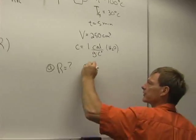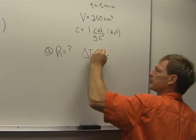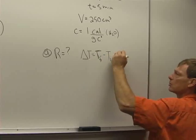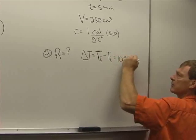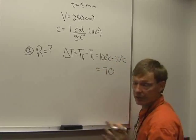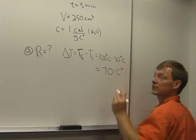The temperature difference is the final temperature minus the initial temperature, which is 100 degrees Celsius minus 30 degrees Celsius, which is 70. And it's a temperature difference, so it's 70 Celsius degrees.